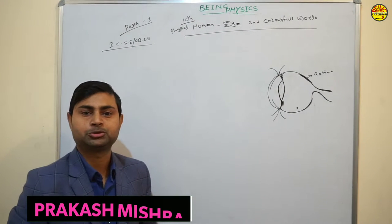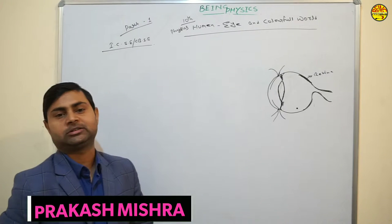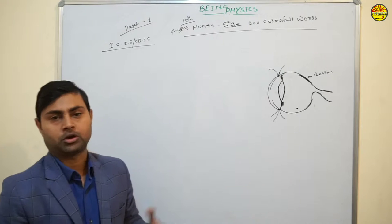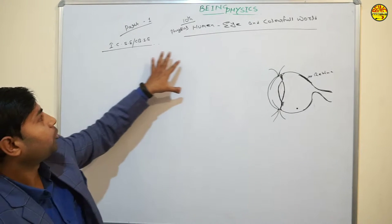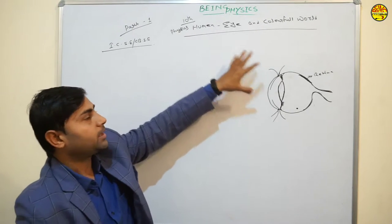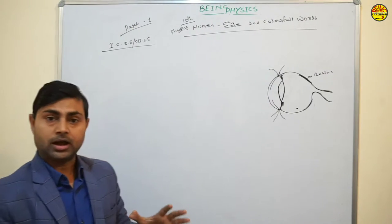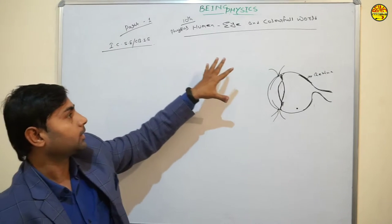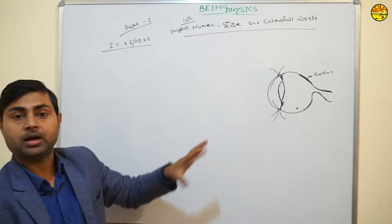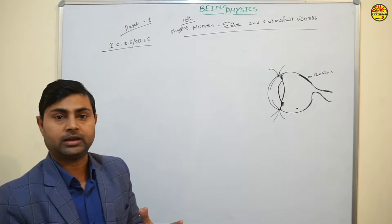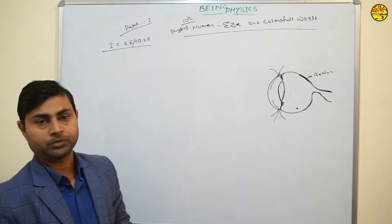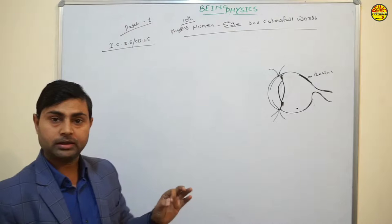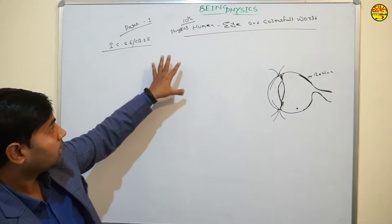Hey guys, welcome to Being Physics. This is Prakash Misra welcoming you again on this channel. Today we are going to talk about Part 1: Human Eye and Colorful World for 10th class. In this video we will talk about the eye and the defects of the eye. This chapter is for ICSE and CBSE boards and is the last chapter for students.